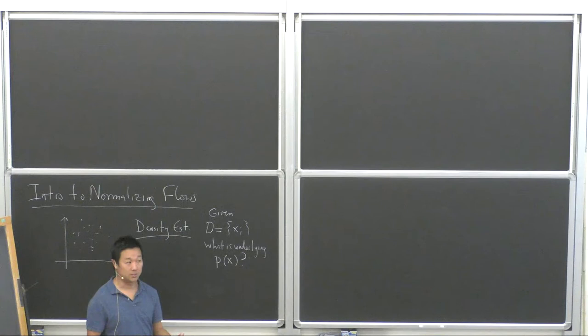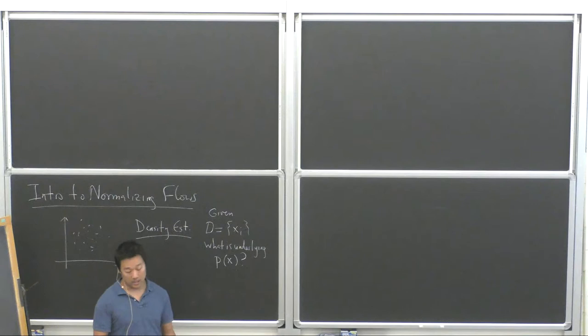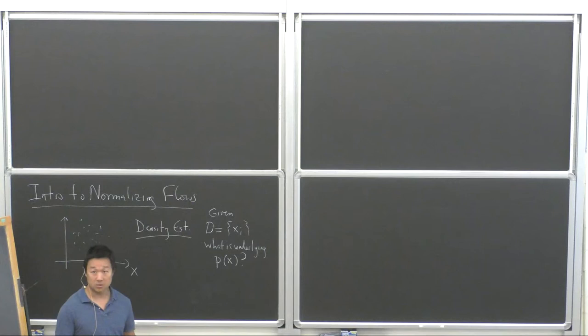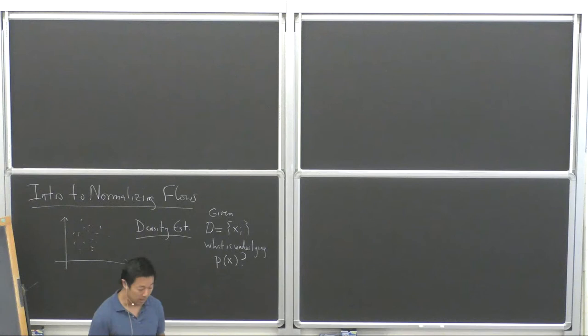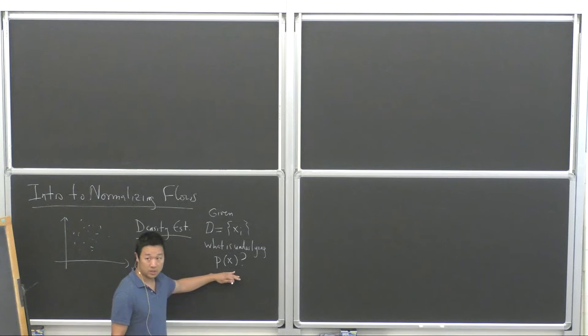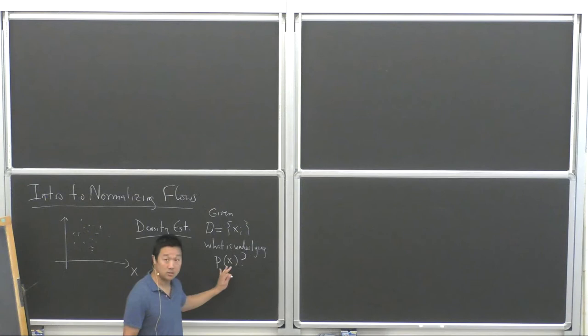We're all familiar with how to do this in one dimension. In one dimension, you just make a histogram, you bin it, and the histogram is a density estimator. Or you could fit it to some function that you like, like a Gaussian. The thing that makes normalizing flows interesting is that they allow us to do this in an unbinned way and in much higher dimensions.